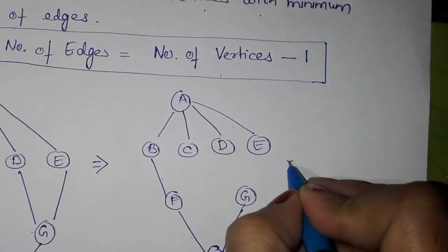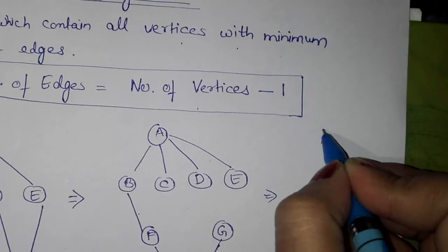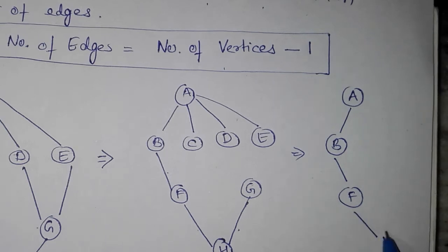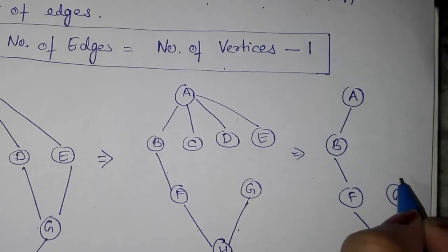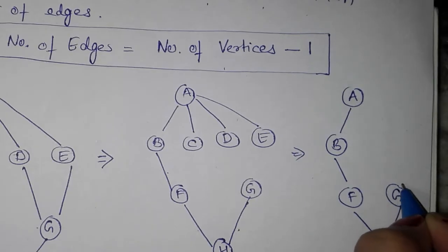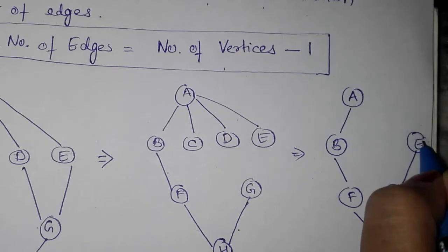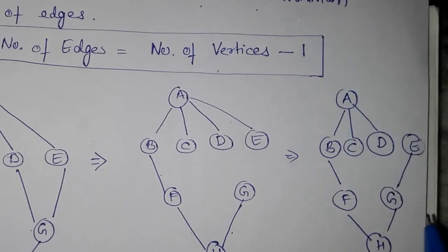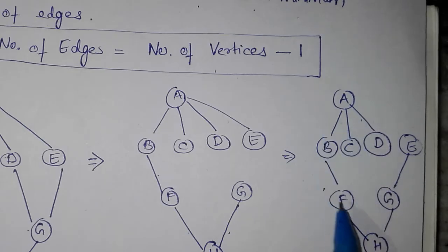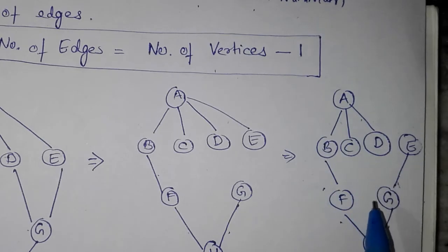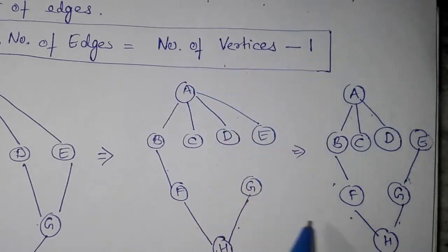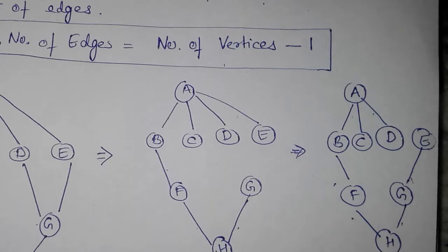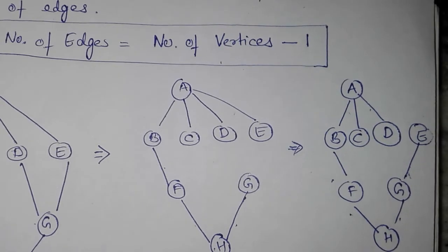You can also draw another spanning tree like this: A, B connected to F, F connected to H, H to G, G connected to E, A connected to C, and A with D. Count the number of edges: 7. So the total number of edges is 7. The number of edges equals the number of vertices minus 1. You can draw any type of spanning tree, but you must remember the number of edges will always be less than the number of vertices.